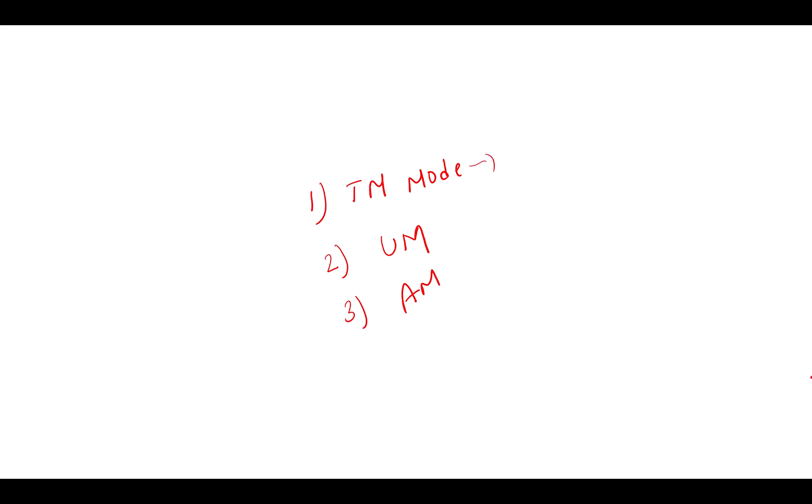Transparent Mode is the simplest mode. It just sends the data packet exactly as it is without any change. Think of it like tossing a box to your friend without any wrapping or checking. This is good for very short critical messages, like RRC information that needs to be transmitted.